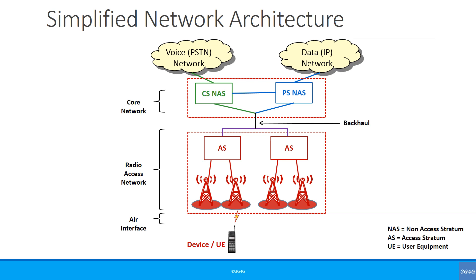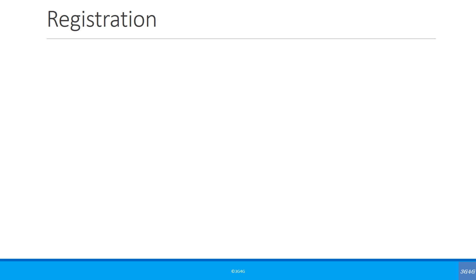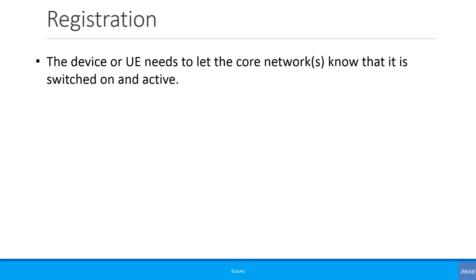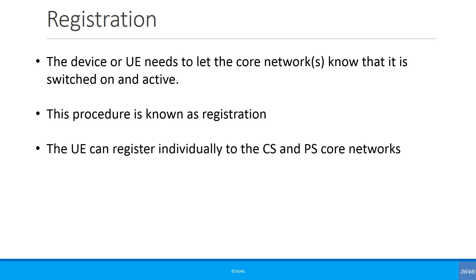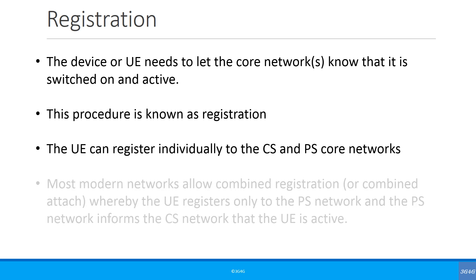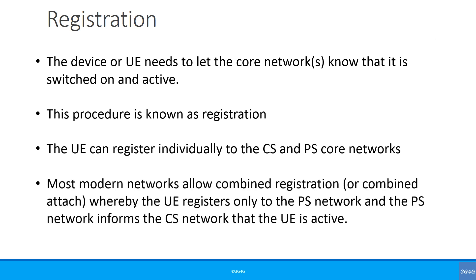The main thing to remember is the device or the UE needs to always communicate to the core network. The access network is just a means by which it can communicate with the core network. The UE needs to let the core network know that it is switched on and active — this procedure is known as registration. The UE can register individually to the CS and PS core networks, but most modern networks allow combined registration or combined attach, whereby the UE can register only to the PS network and the PS network informs the CS network that the UE is active.